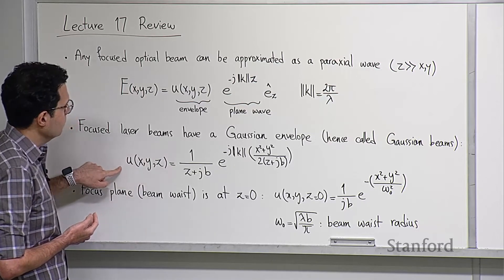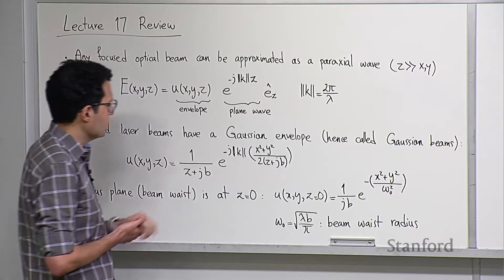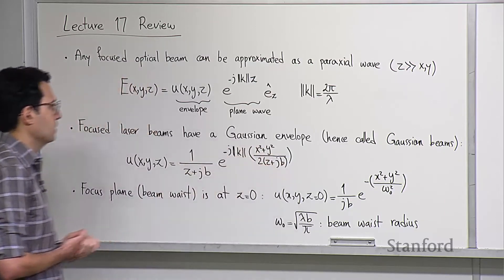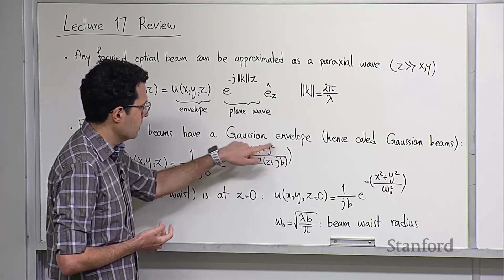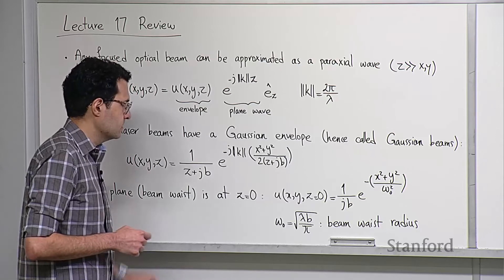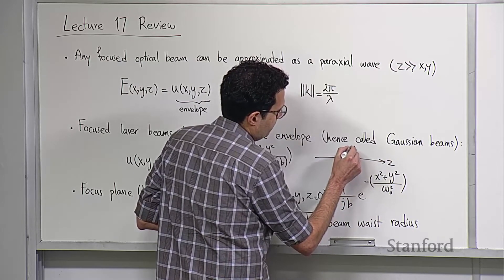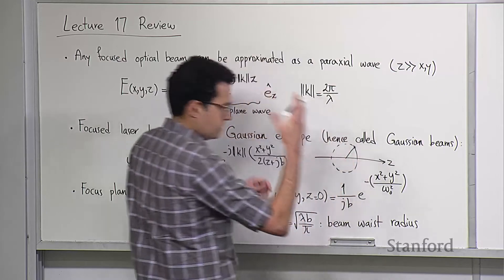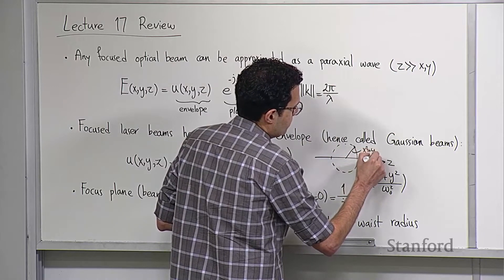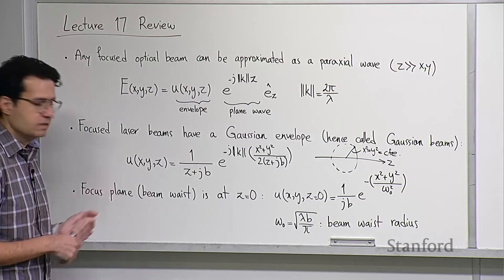The envelope for lasers is given by a complex-valued Gaussian function: (1/(z + jb)) times e^(-j·k·(x² + y²)/(2(z + jb))). The only place x and y appear is in x² + y², which is the radial distance from the optical axis. Any point on a circle perpendicular to z has constant x² + y², showing the radial symmetry expected of a 2D Gaussian.